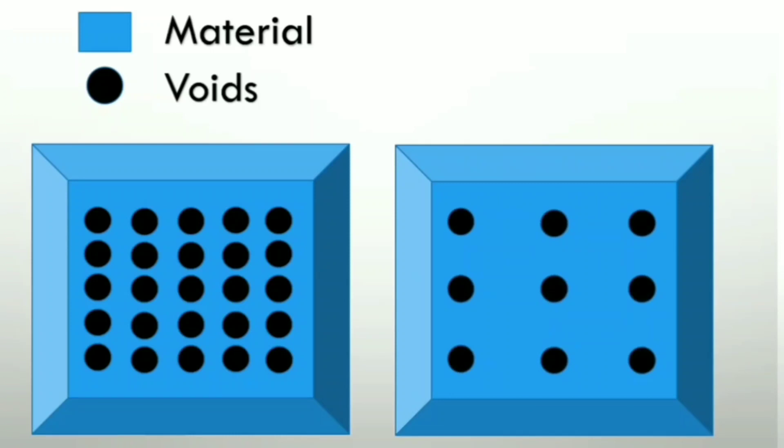has comparatively less voids. So depending upon the percentage voids, the left one has more porosity and comparatively the right one has less porosity. Or we can even say that material on the left-hand side is more porous as